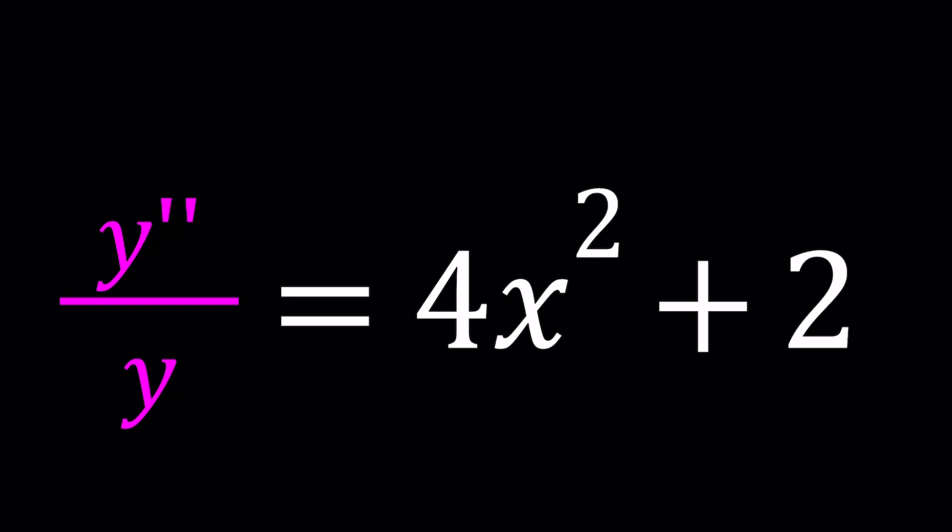I call this interesting because we have the second derivative being divided by the original function y. So y is a function of x, the second derivative of y, which is y double prime, divided by y equals 4x² + 2. And we're going to be solving for y.